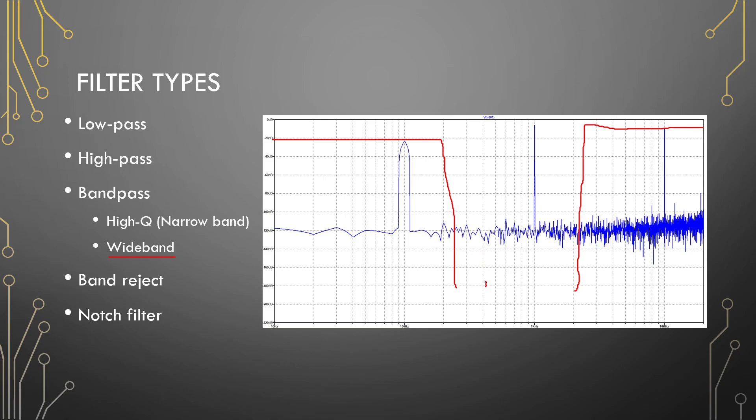A band pass filter is a filter that only allows a certain bandwidth of frequencies to pass through. So it is a combination of a low pass and the high pass filter. For first orders we can only do wide band filters. If we want to do narrow band filters that is higher order filters and they are when you want to isolate the frequency or a very narrow bandwidth. We can't do that with first order filters.